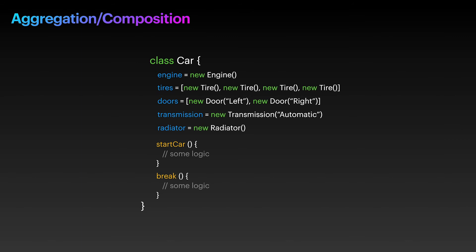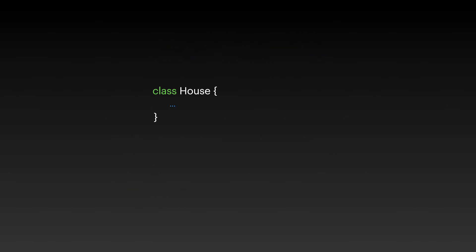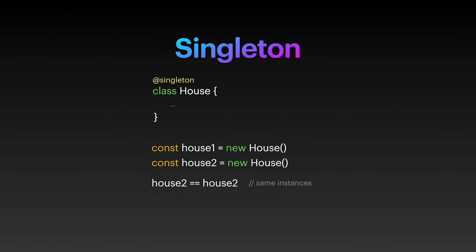There are also many other terms you should be familiar with in the object-oriented world. For example, an abstract class, which is a special class that can only be extended and not instantiated. Singletons are also a special type of class — it is a class that no matter how many times you instantiate it, you always get the same instance, which means that any reference you have of it gets affected by any changes you make.